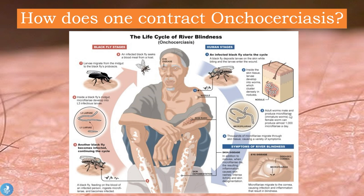The adult worms mate and produce microfilaria, which are immature worms. A female worm can produce almost 1,000 microfilaria a day. Thousands of microfilaria migrate through the skin tissue causing a variety of symptoms. The microfilaria begin to infiltrate the patient's skin, resulting in the presence of a skin rash — the patient becomes very itchy and papules appear on the skin.